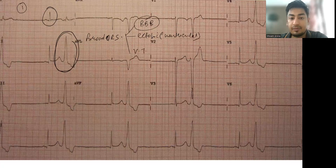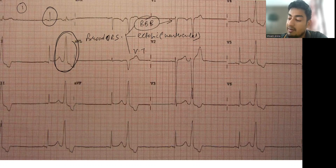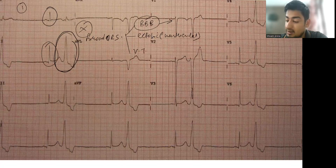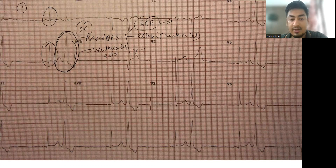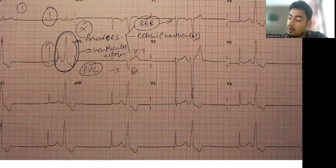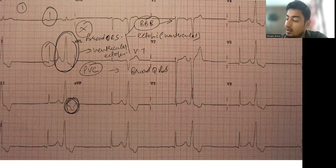Since bundle branch block would have to occur in every complex, this is not a bundle branch block. This is a ventricular ectopic, and as it is coming early, it is known as a premature ventricular contraction. It has a broad QRS with a discordant T wave.